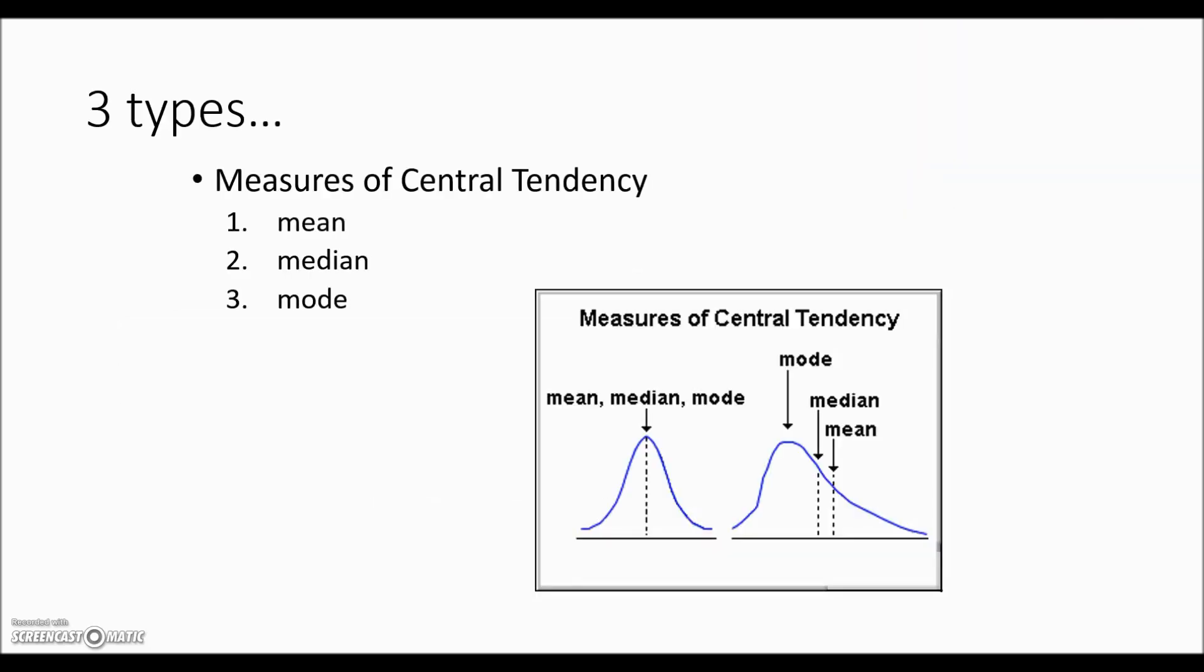There are three types of central tendencies that we will calculate in this section. They are the mean, median, and mode. If our data is very similar, these values could be very close to one another. But if our data is skewed where a bulk of the values are in one area with some numbers not similar to the rest, then we may find that there is a difference between the mean, median, and mode.